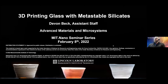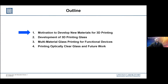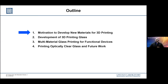Thank you, Bob, for that excellent introduction. My name is Devin Beck, and today I'm going to be talking about 3D printing glass with metastable silicates. The outline of this talk will compose of four parts: initially the motivation to develop new materials for 3D printing, then our approach in the development of 3D printing glass, then what we can do with this capability to fabricate multi-material glasses and functional devices, and finally printing optically clear glass at low processing conditions and our future work going forward.